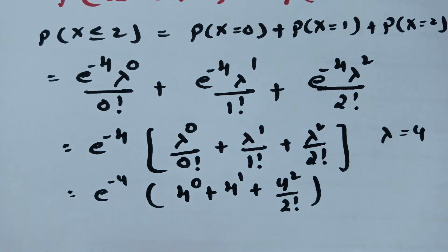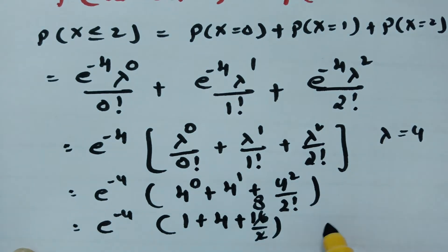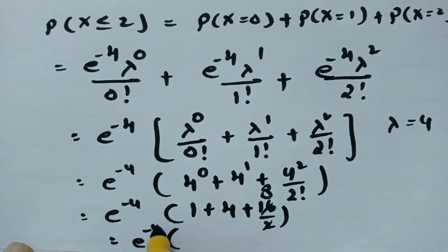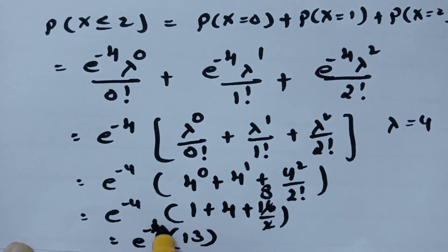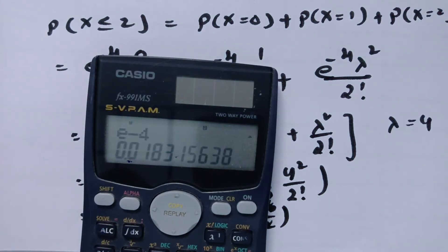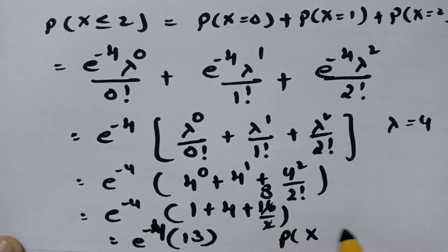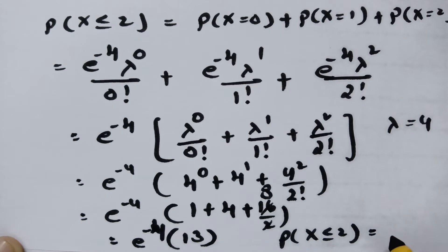16 divided by 2 equals 8, so we have e^(-4) × (1 + 4 + 8) = e^(-4) × 13. The value is e^(-4) × 13, which equals 0.23810. So the probability of at most 2 emergency calls is 0.23810.